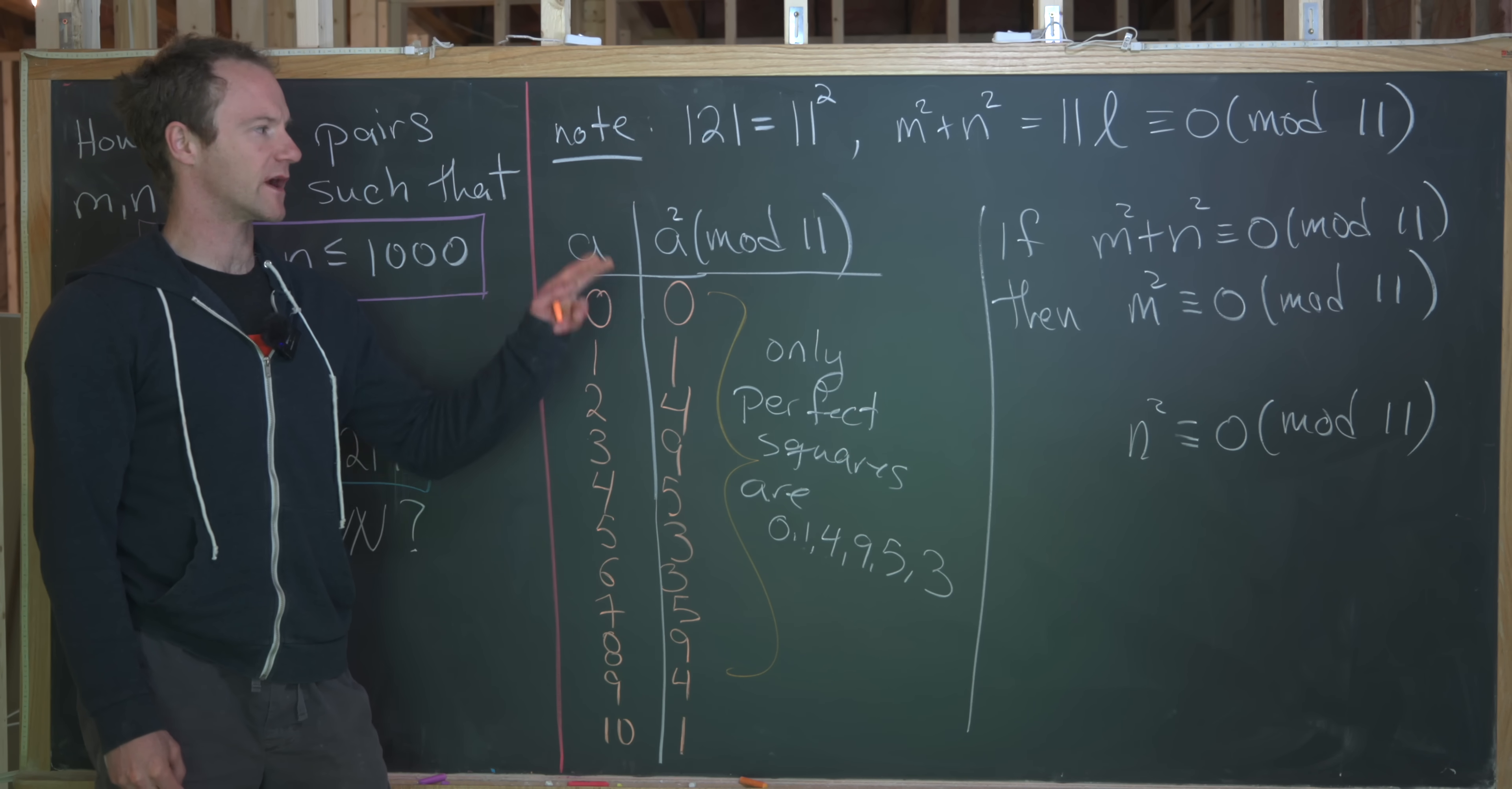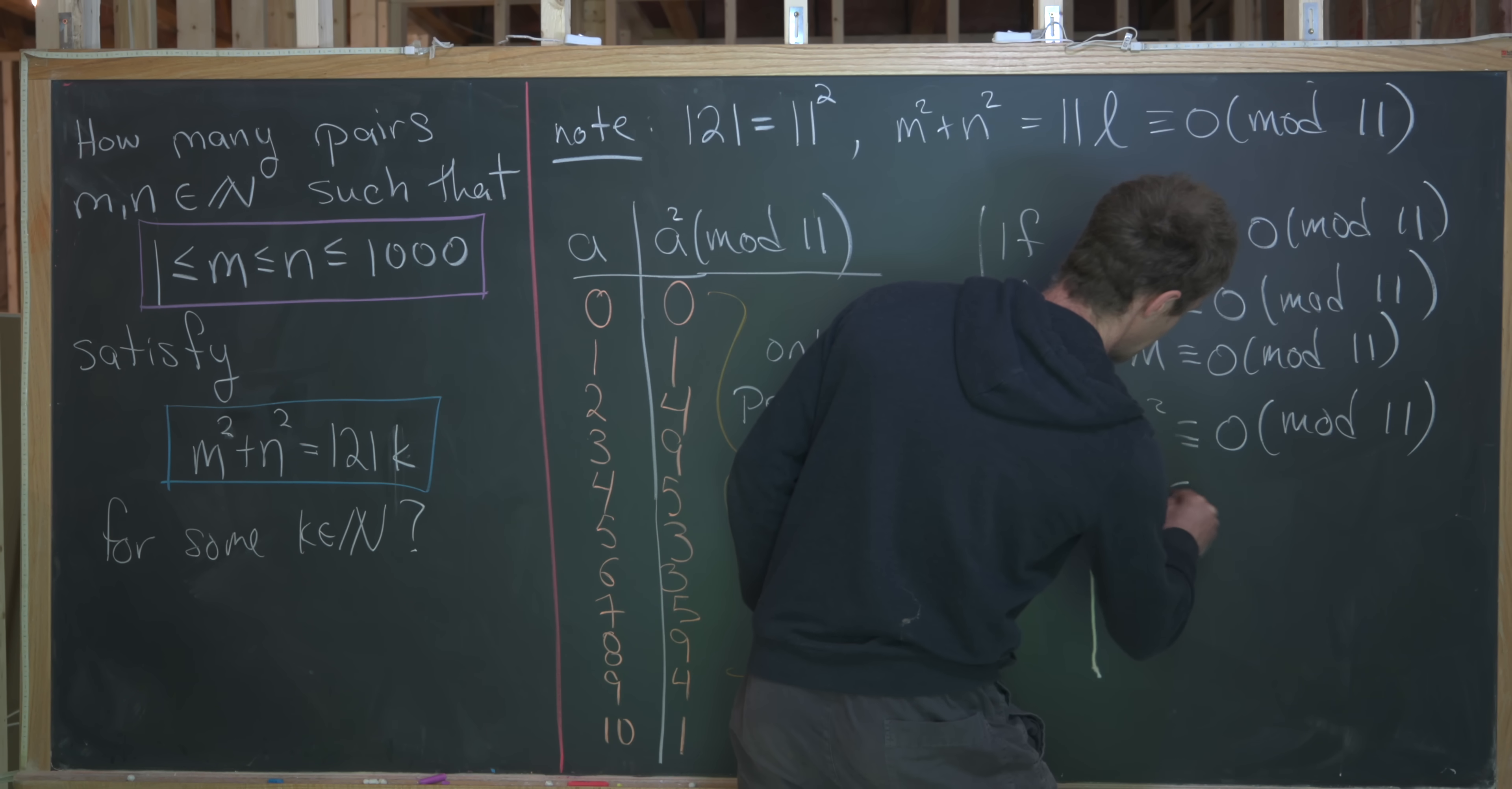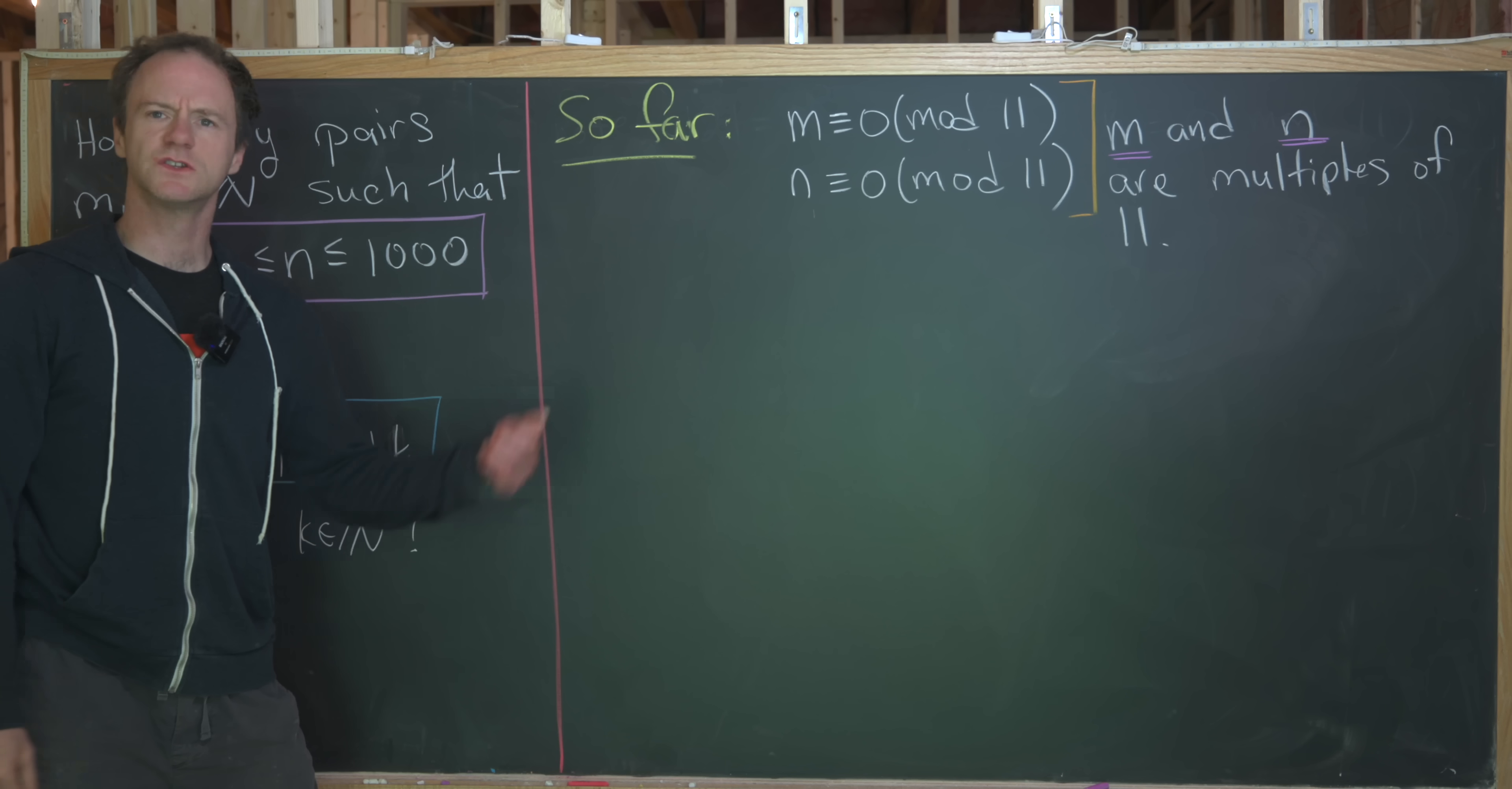So if m squared plus n squared is congruent to 0 mod 11, then m squared is congruent to 0 mod 11, and n squared is also congruent to 0 mod 11. And that's just from noticing what we did with this list over here. But if m squared is a multiple of 11 and 11 is prime, that means that m is also a multiple of 11. In other words, m is congruent to 0 mod 11. And also n is congruent to 0 mod 11. In other words, n and m are both multiples of 11. So let's maybe bring that fact over here, and then we'll finish it off.